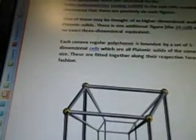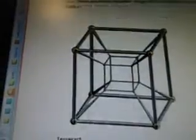Five of these may be thought of as higher-dimensional analogs of the platonic solids. There is one additional figure, the 24-cell, which has no exact three-dimensional equivalent. Each convex regular polychorion is bounded by a set of three-dimensional cells, which are all platonic solids of the same type and size. These are fitted together along their respective faces in a regular fashion.